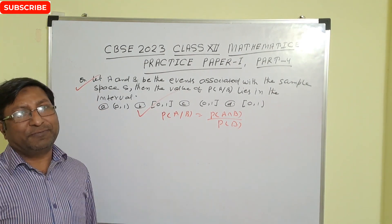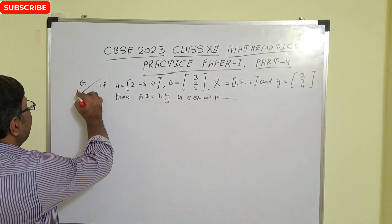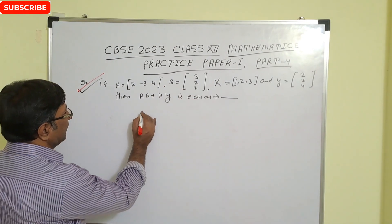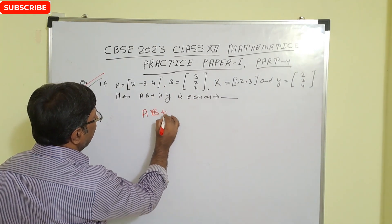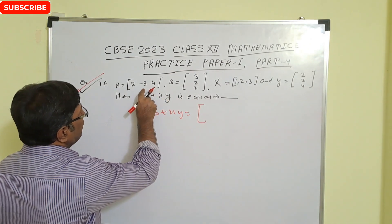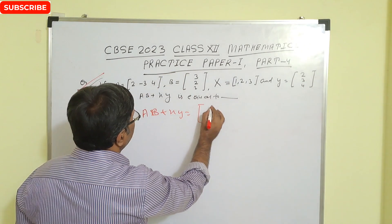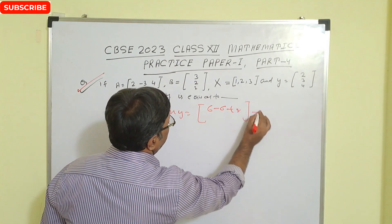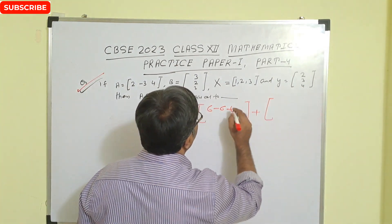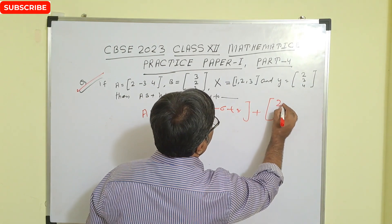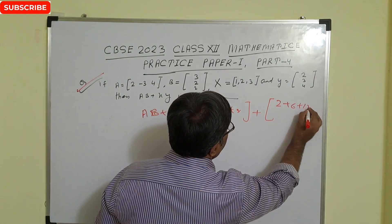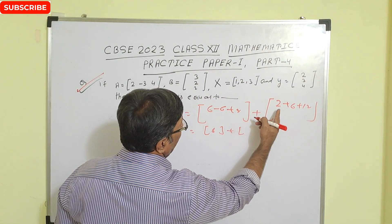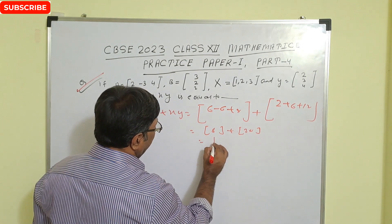Next question: given matrix A = [[2, -3], [4, ...]] and matrix B = [[3, 2], [x, y]], find AB + XY. For AB, first row first column: 2×3 = 6, minus 3×2 = 6, so -6 + 8 = 8 (using that entry). For XY, first row first column: 1×2 = 2, 2×3 = 6, 3×4 = 12, giving 8 and 20. So 20 + 8 = 28 is the correct answer.